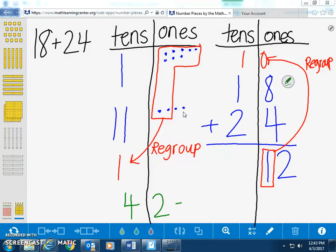So, our answer is 42. Just like the pictorial model, we will add up the 10s on the algorithm. So, 1 10 plus 1 10 plus 2 10s equals 4 10s, which is the same as 40.